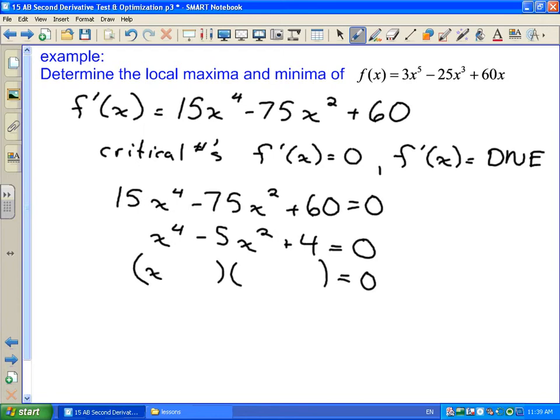We're going to have x squared, x squared, 4, 1, and they're both going to be negative. So x squared minus 1 times x squared minus 4. And then from here, we can factor it once more, because these are both differences of squares. So x minus 1, x plus 1, x minus 2, x plus 2.